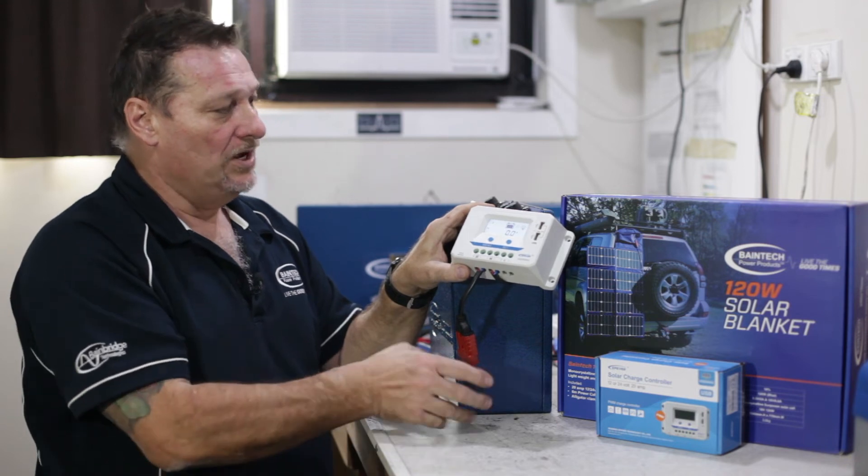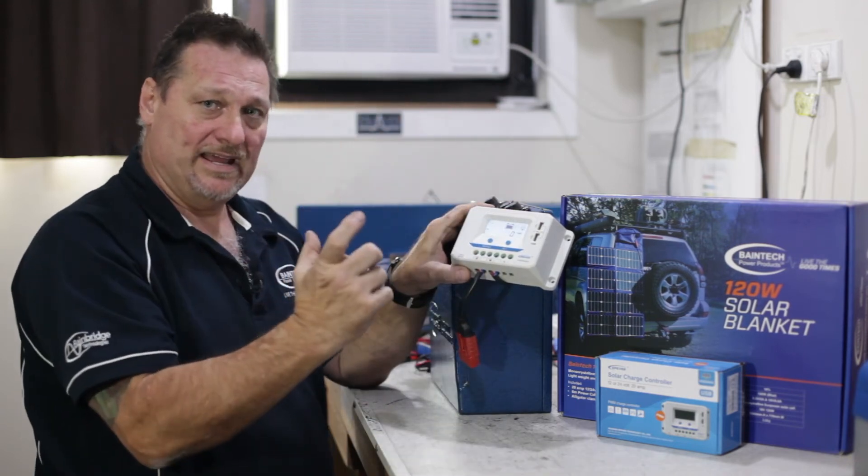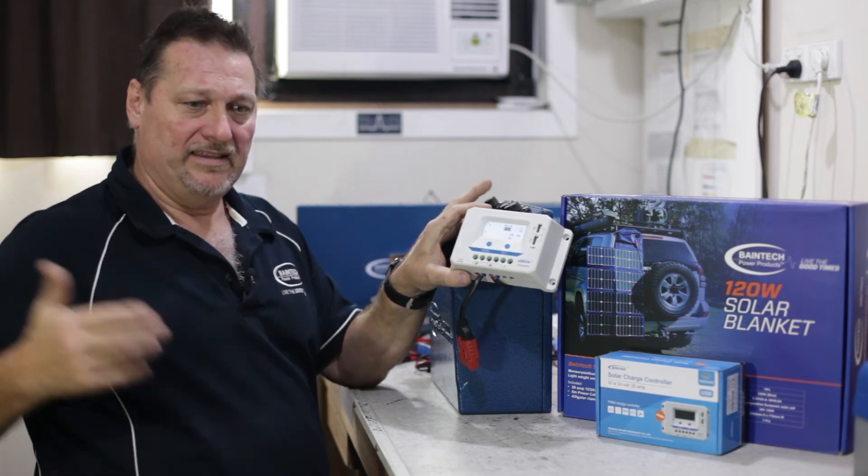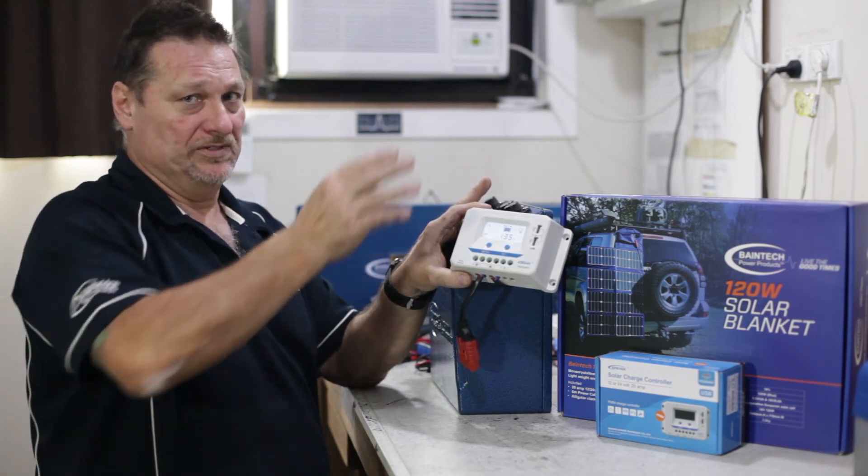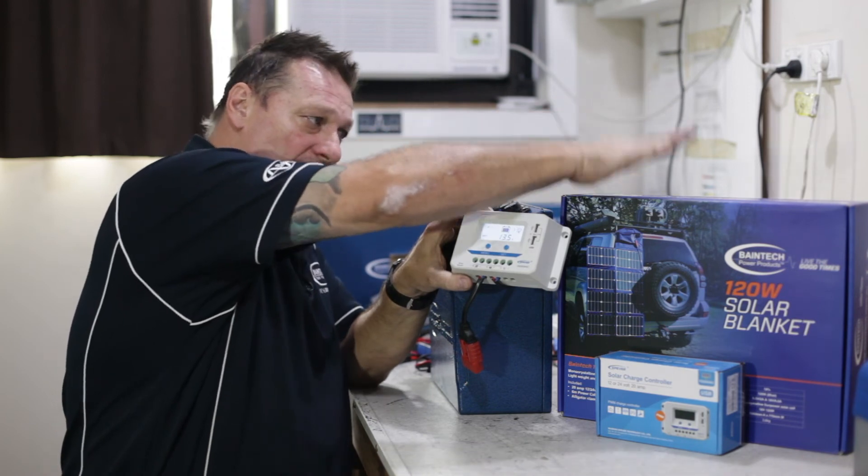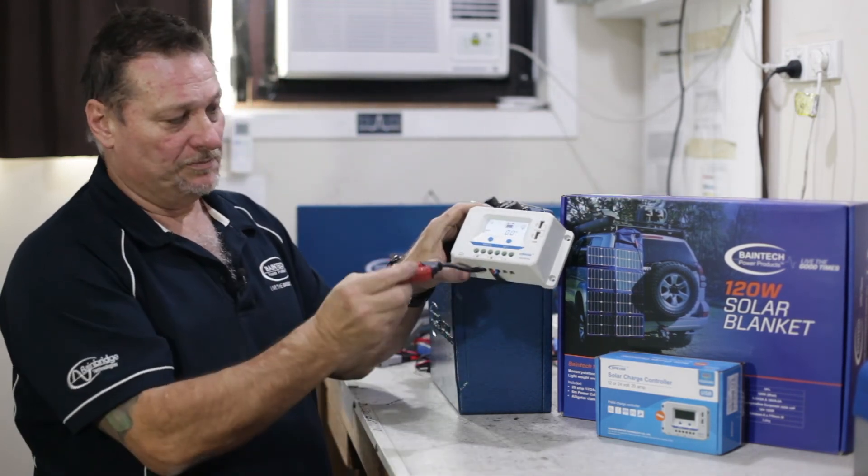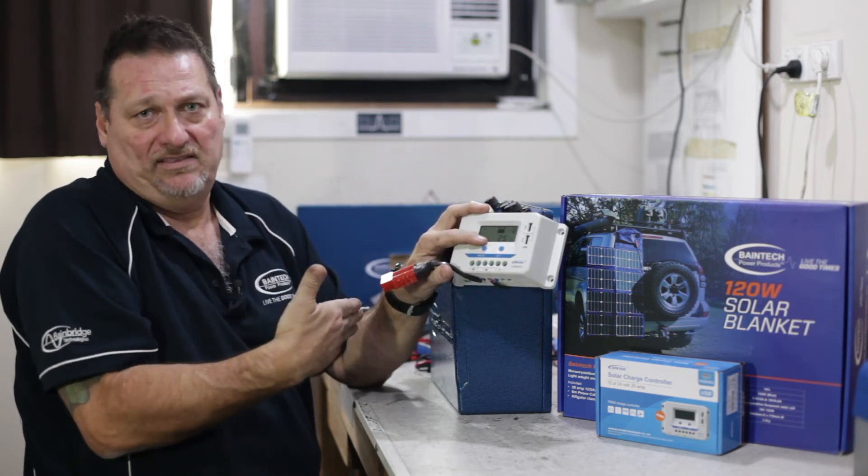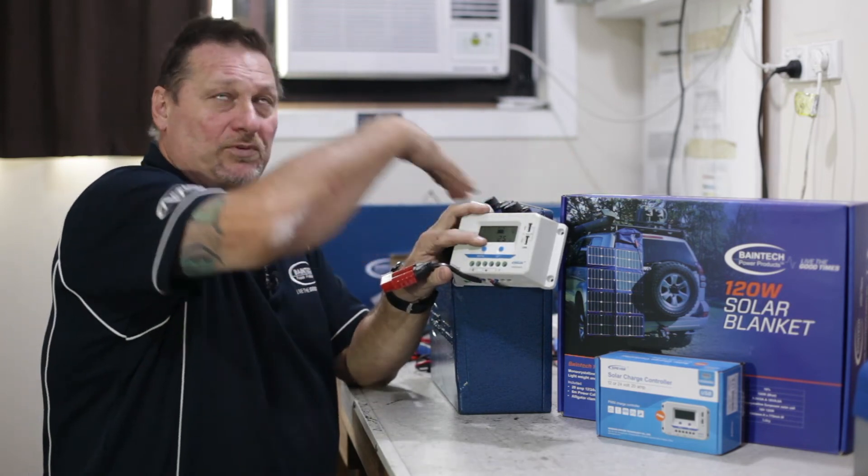The blanket itself has a red Anderson plug. Also inside this particular blanket comes with a 5 meter extension lead which has got a red Anderson to plug into the solar blanket and then on the other end there's a red Anderson to plug into that.